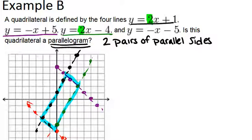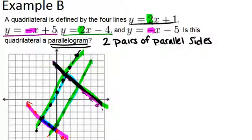There are two lines with a slope of 2. That's this line and this line. And there are two lines with a slope of negative 1, which was this line and this line. So because the opposite sides have the same slopes, it has to be a parallelogram.